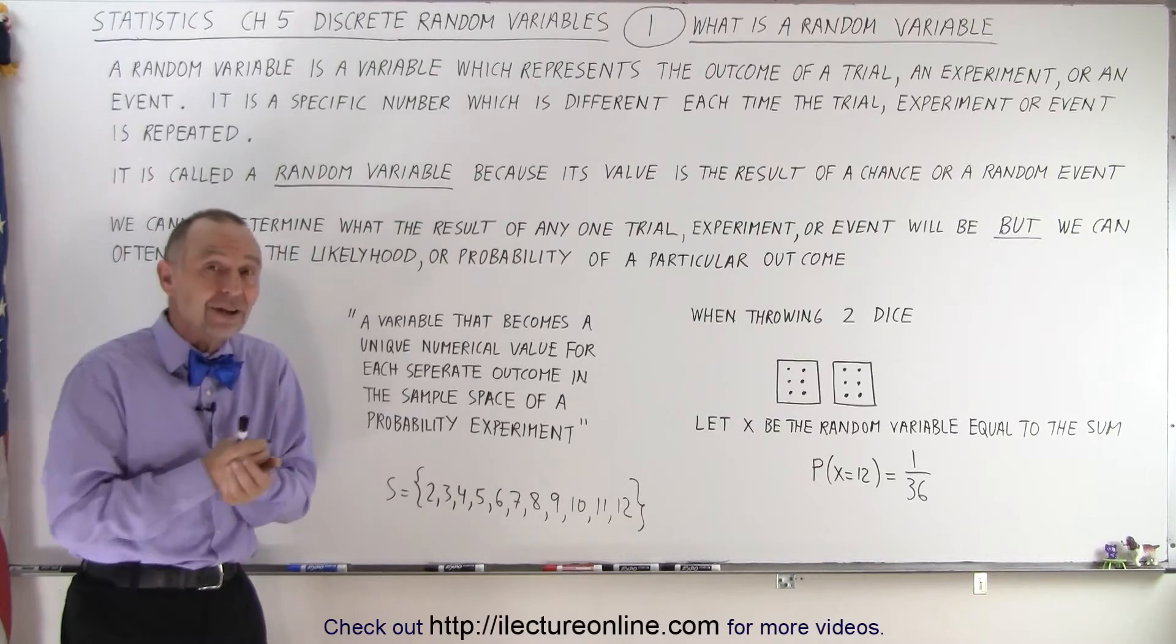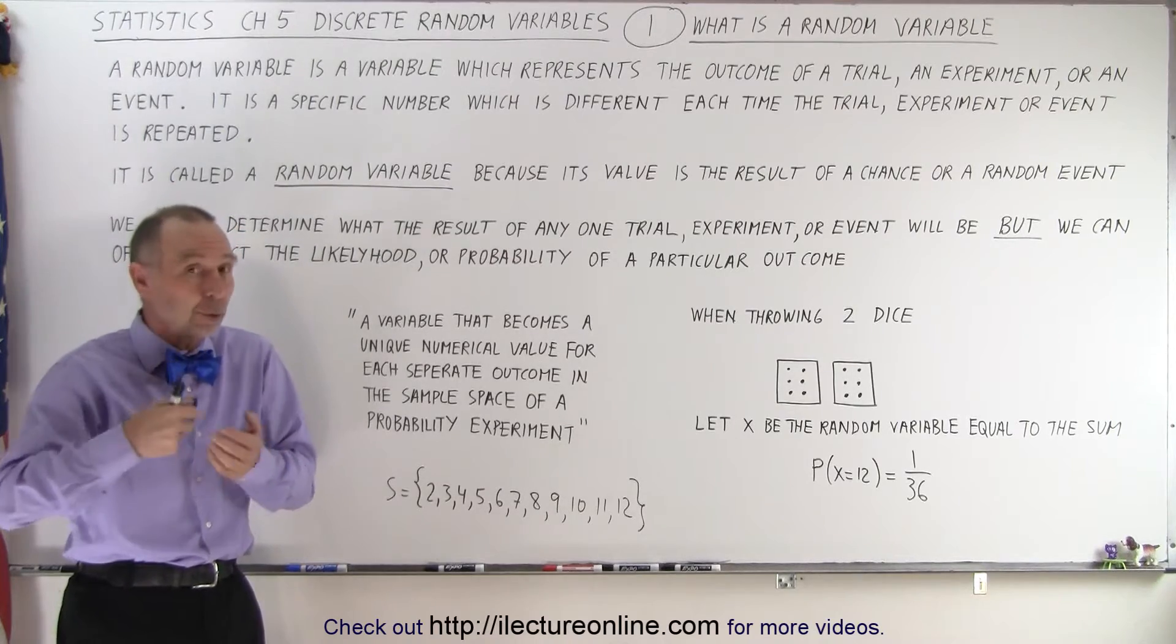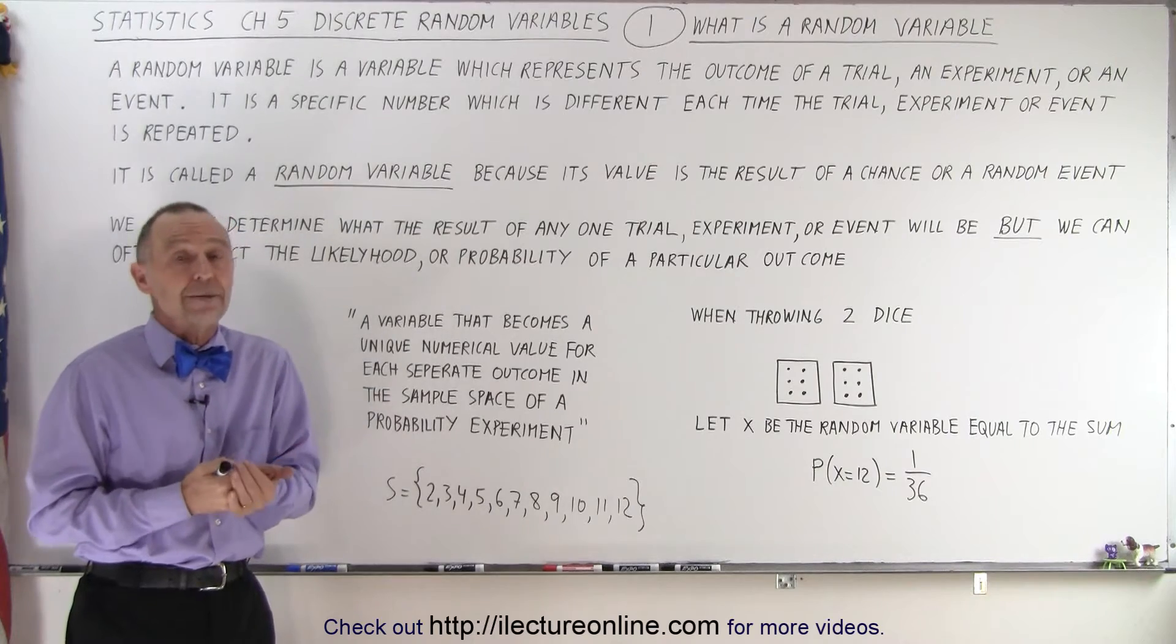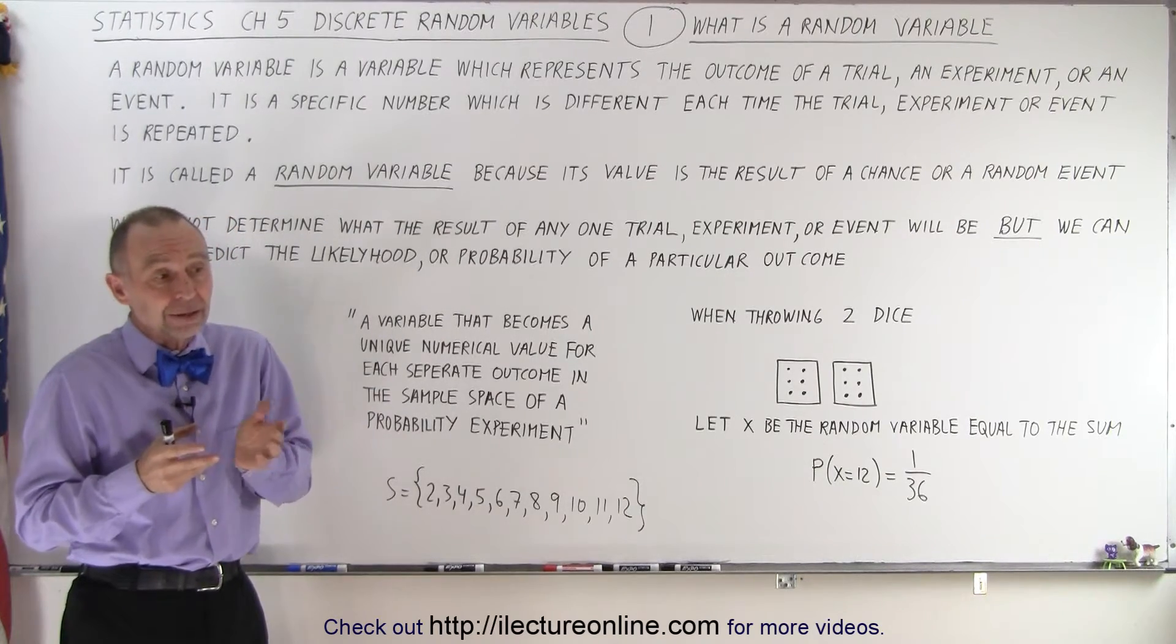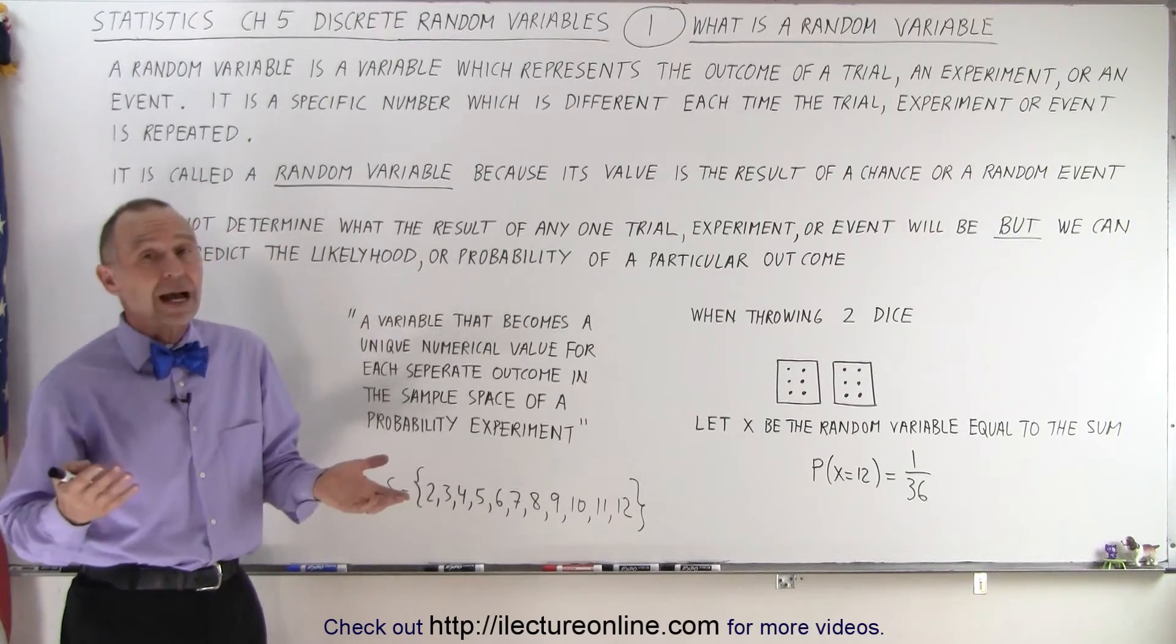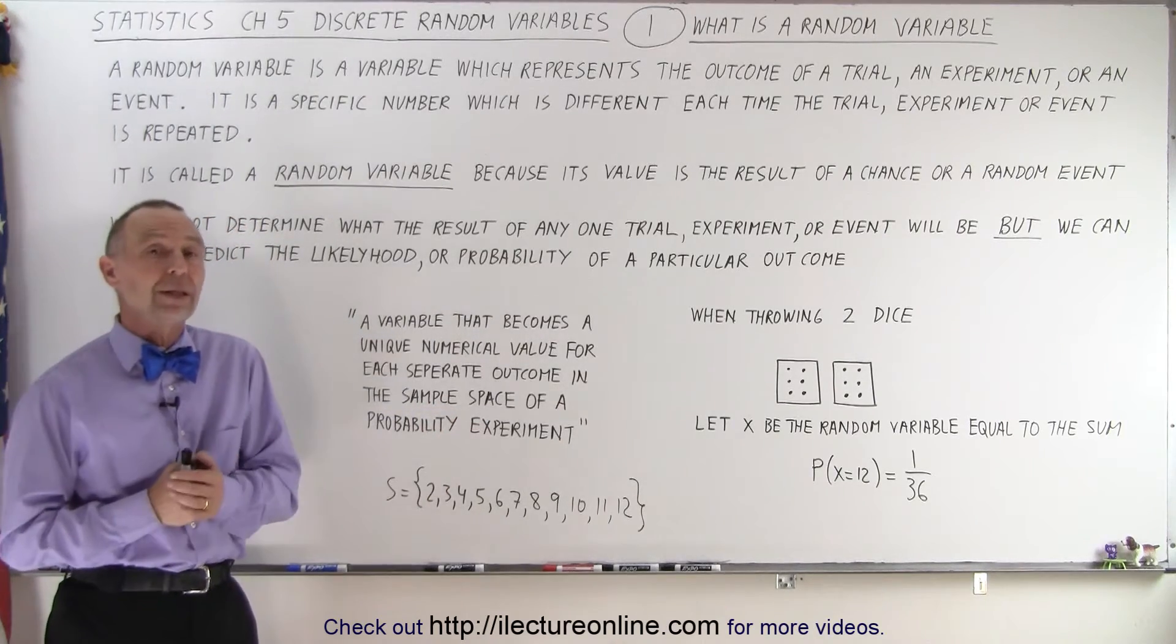But what it will be at any given time, for example when I flip a coin or throw dice, I don't know what the value is going to be. I can predict that there's a certain probability it will be a particular number, but at any given time it can be any one of the possibilities.